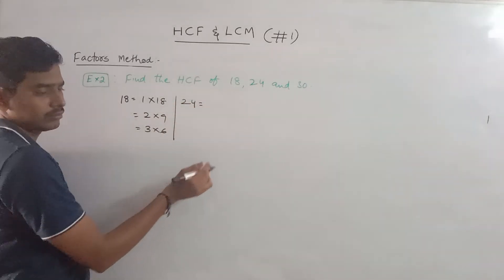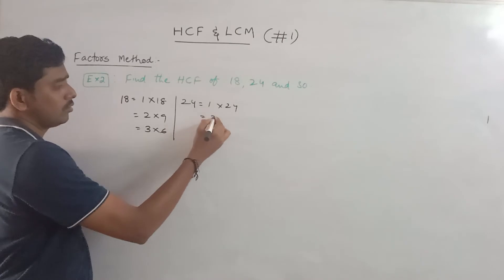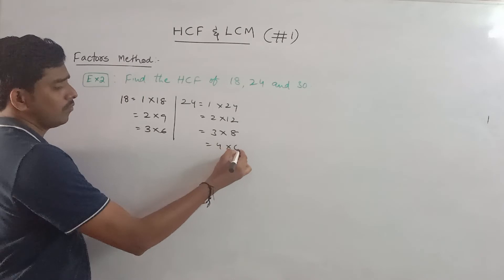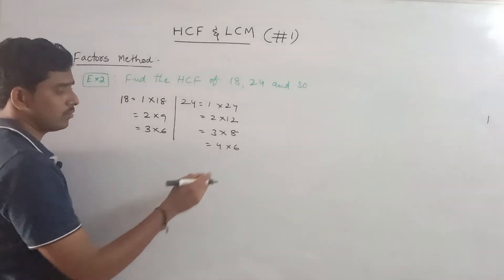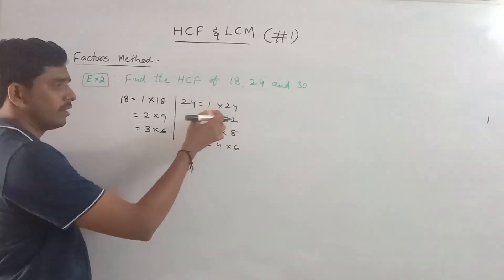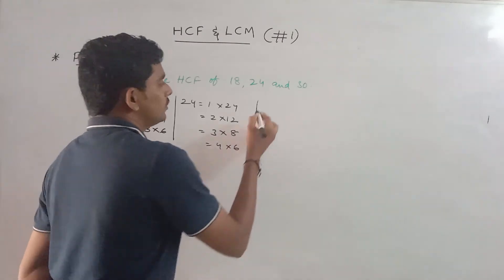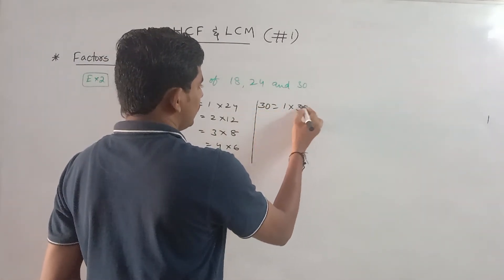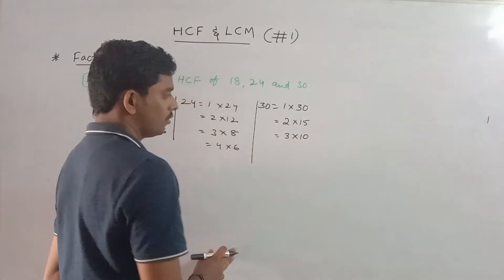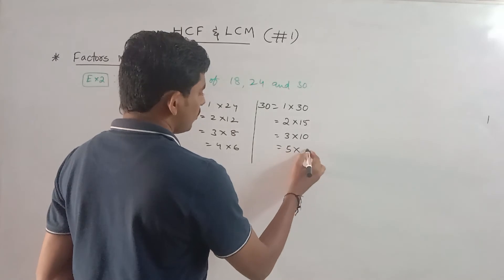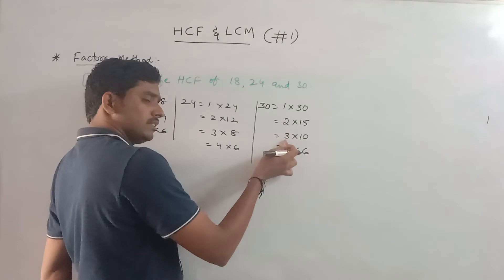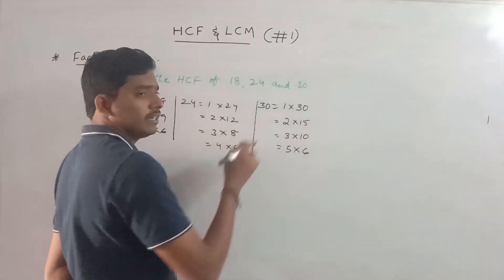Factors of 24: 1, 2, 3, 4, 6, 8, 12, 24. Factors of 30: 1, 2, 3, 5, 6, 10, 15, 30.